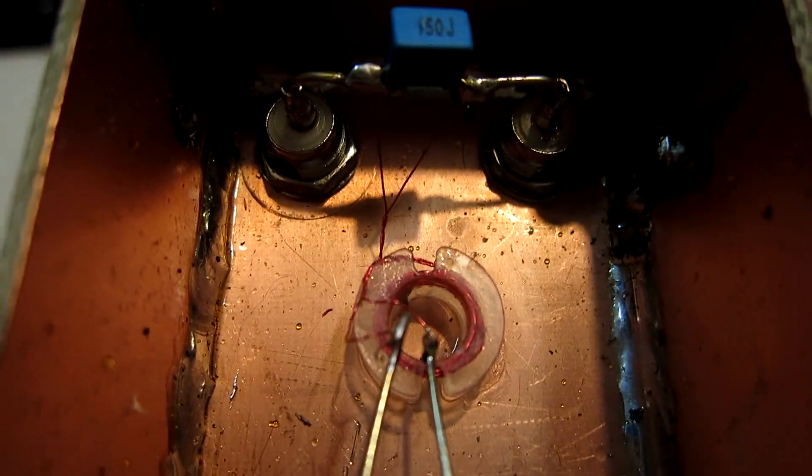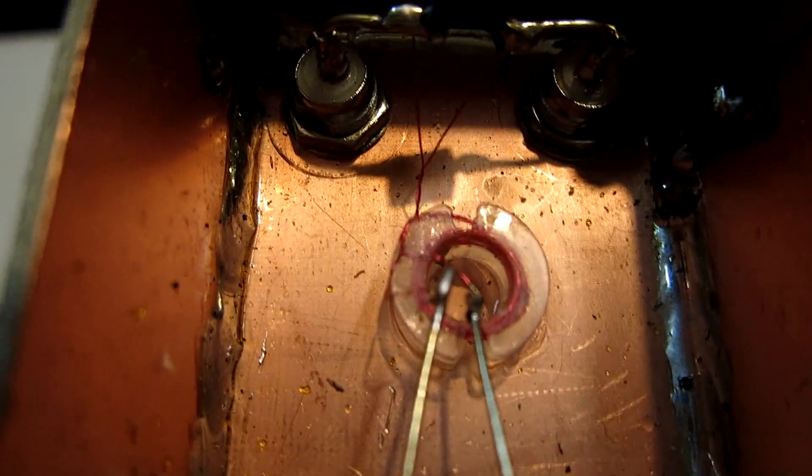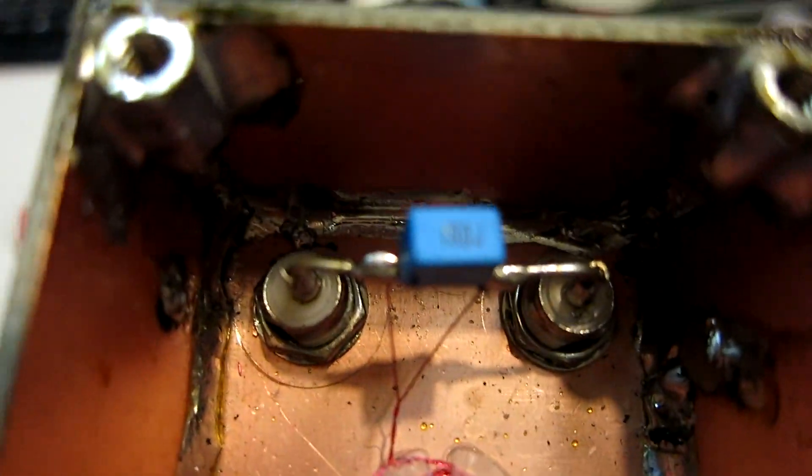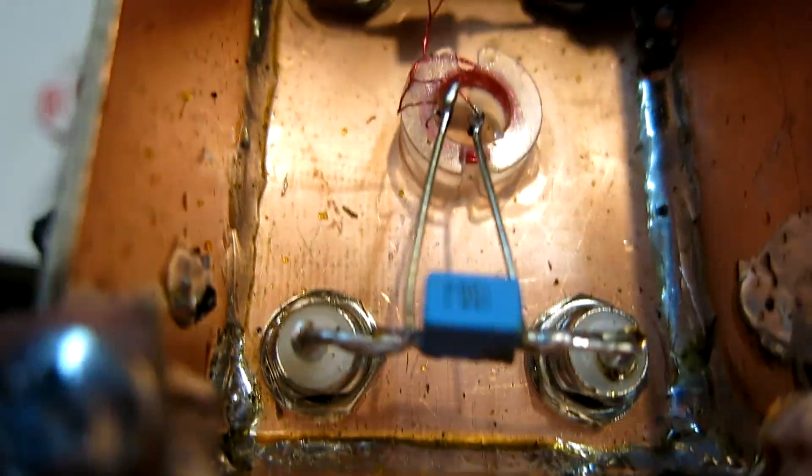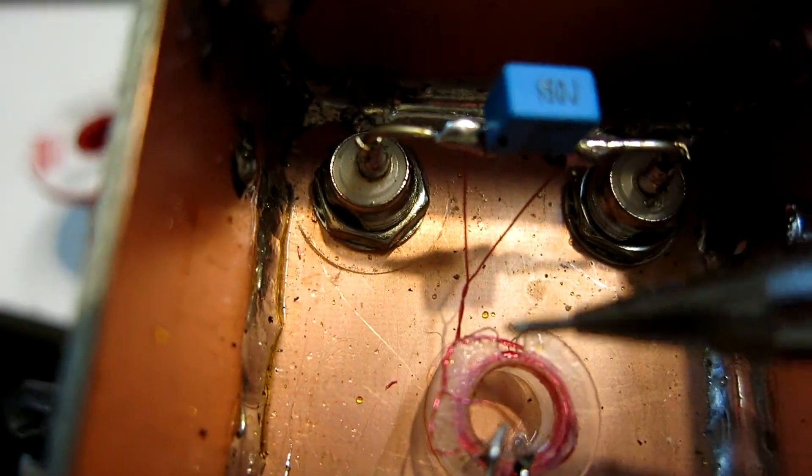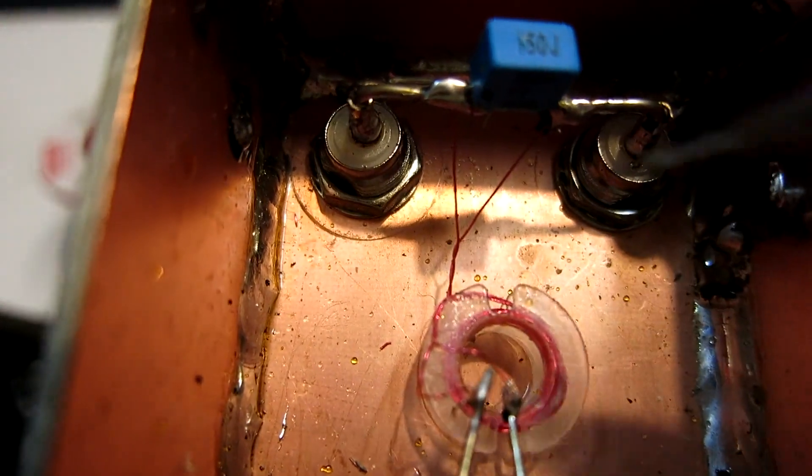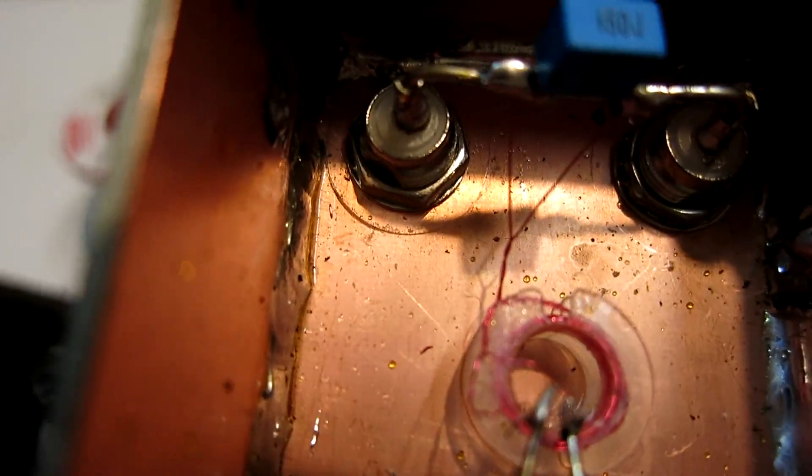This is what the 90 degree hybrid looks like internally. Two capacitors between two inputs here and between the other two inputs here. And then a twisted pair, 0.2 mm enamel wire, turned some turns around this plastic bobbin. There is no ferrite anywhere.